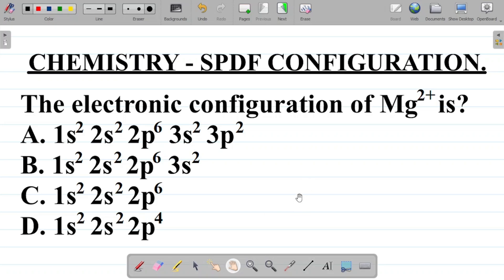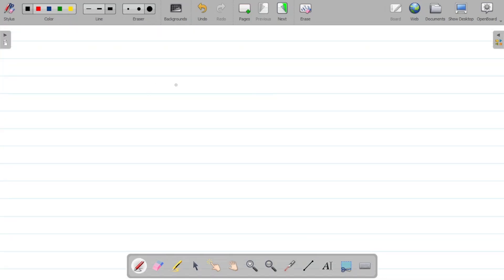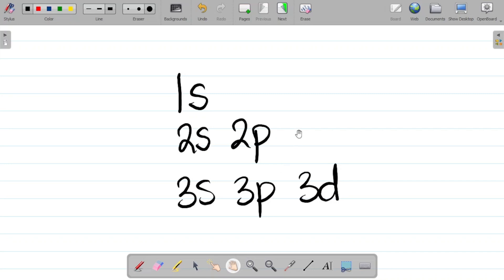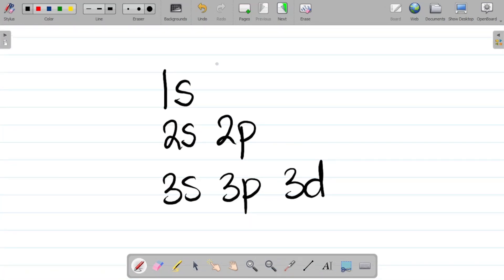This question is on the SPDF configuration of elements. In SPDF configuration, the first thing you have is 1s. Then you have 2s and then 2p. Then you have 3s, 3p, 3d. We can continue with this, but for this question you just need this. The arrangement is simply 1s first, then 2s, then 2p, 3s.